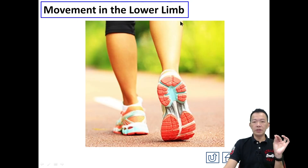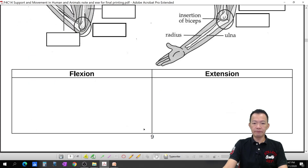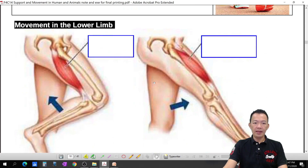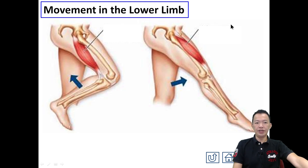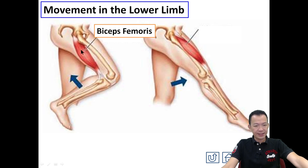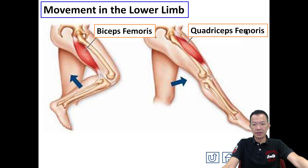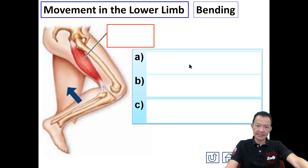Movement at the lower limbs — that is your legs. Before I start, label on your notes page number ten. So lower limbs — what are the main muscles at the lower limbs? The muscle below is called biceps femoris. When your leg bends, it contracts — so it's called flexion. The muscle on the front, when it contracts, the leg straightens — that's extension. It's called quadriceps femoris.